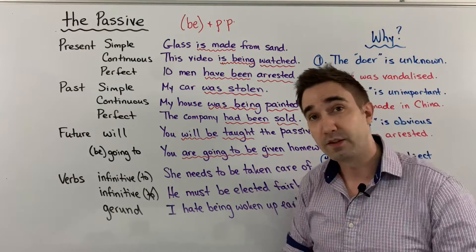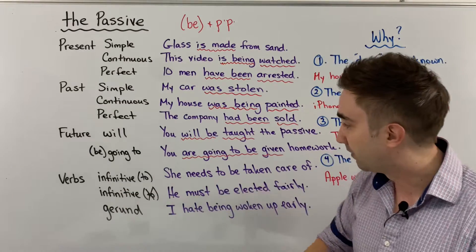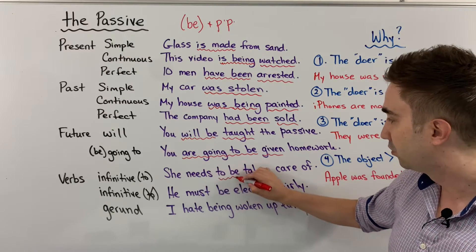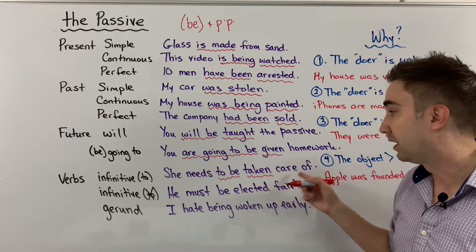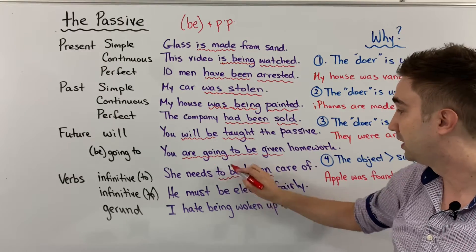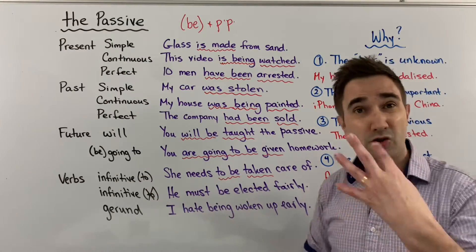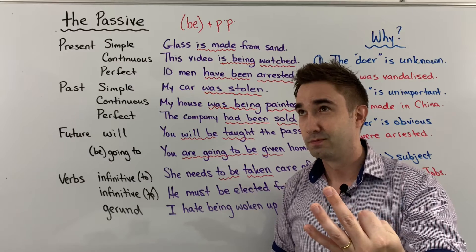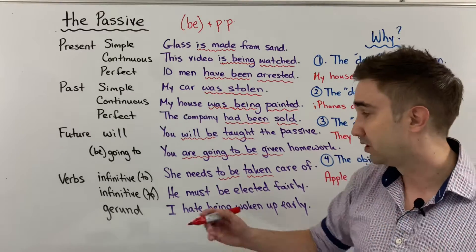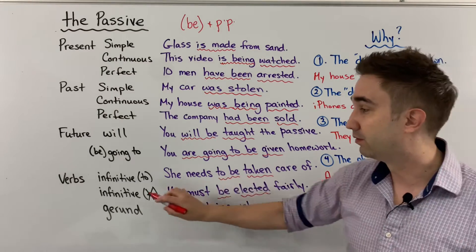In one of my last videos we talked about infinitive or gerund — to or ing. Sometimes we have the verb 'need,' and need is followed by 'to.' So: she needs to be taken care of. 'Need' is always followed by 'to,' so here's the verb 'to be' — to be taken care of. Be plus past participle. And for no 'to': must, should, can, have to — all of these modal verbs, we don't use 'to.' So: he must be elected. Must is followed by just the infinitive, no 'to.'